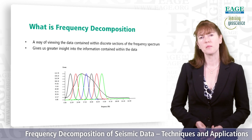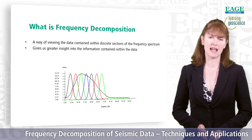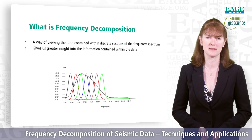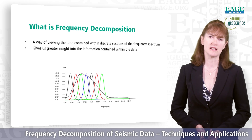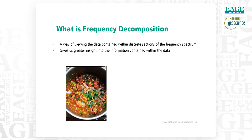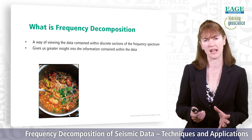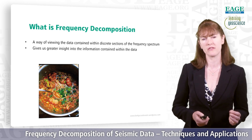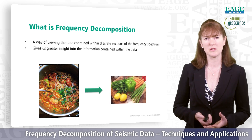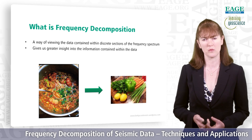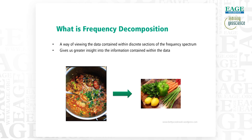Frequency decomposition is a way of viewing discrete elements of the data by looking at band-limited sections of our frequency spectrum. This gives us greater insight into the information contained within the data. It's a bit like having a big bowl of soup — you're tasting the entire thing. If you want to understand exactly what goes into that soup, you need to identify each component part. That's what we do with frequency decomposition: we take out the individual ingredients so that we can understand them in more detail and look at them individually.